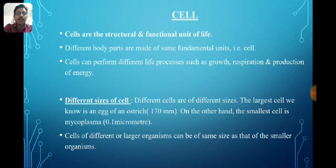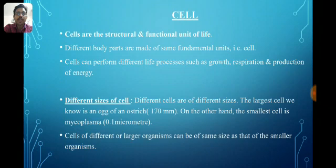The largest cell we know is the egg of an ostrich, which is about 170 millimeters long. On the other hand, the smallest cell is mycoplasma, which is only 0.1 micrometers. Cells of different larger organisms can be of the same size as those of smaller organisms — the difference is only in the number of cells.